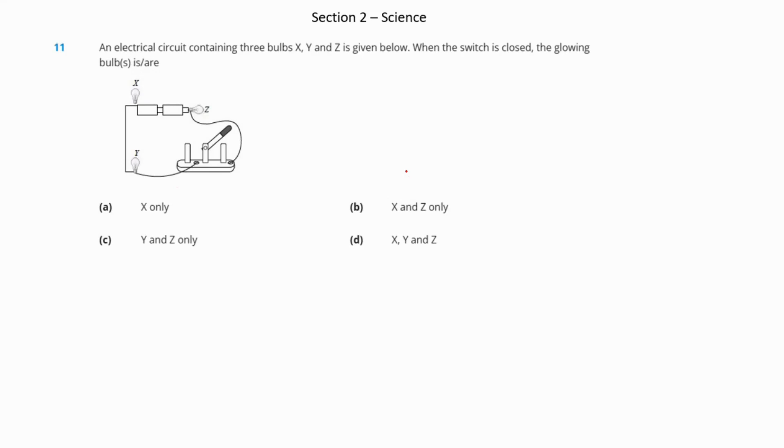Question 11: This part starts with the science questions, each comprising one mark. An electrical circuit containing three bulbs X, Y, and Z is given. When the switch is closed, which bulbs will glow? Bulbs Y and Z are connected to the wire making a complete circuit, unlike bulb X which is not attached. Hence only Y and Z bulbs will glow when the switch is closed. Answer is option C.